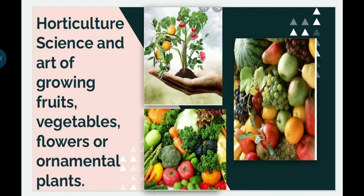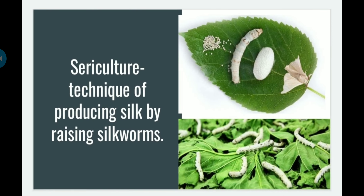The next one is sericulture. Sericulture is the technique of producing silk by raising silkworms. India is also one of the largest producers of silk. We study the specialized branch called sericulture so that we can maintain the quality, quantity, and supply of silk.